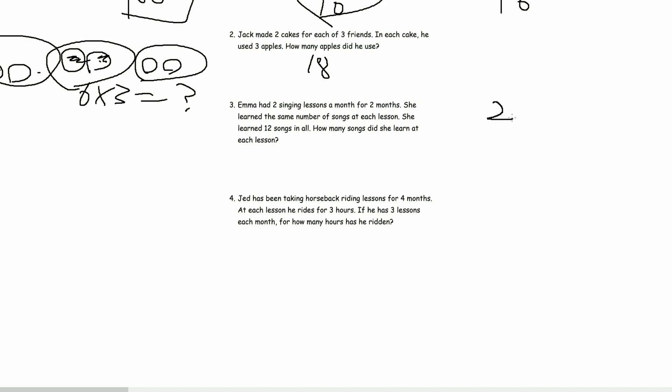So, 2 singing lessons a month for 2 months. That means she had 2 singing lessons this month, and 2 singing lessons another month. So, she had 4 singing lessons in total. And, she, in total, she learned 12 songs. In 4 lessons. So, 12 divided by 4.